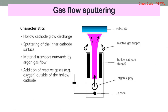Gas flow sputtering, or GFS, is a special physical vapor deposition method among the sputtering processes. Unlike familiar magnetron sputtering, the plasma is produced by a hollow cathode glow discharge and the transport of material is carried by an intense flow of argon gas. The sputtering target, usually metallic, takes the shape of a hollow cathode, generally in the form of two rectangular plates arranged in parallel or a short tube, with argon flowing through it. Ions from the hollow cathode discharge evaporate the target, and the flow of argon transports the material to the substrate, primarily in atomic form. The typical working pressure is 0.2 to 0.8 millibar.